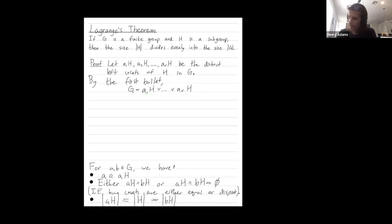Okay. Next, I'll say the following by the second bullet. The size of G is equal to the size of these cosets all added together.